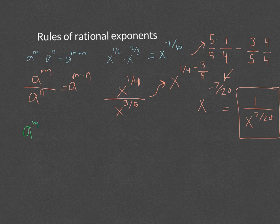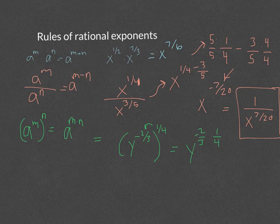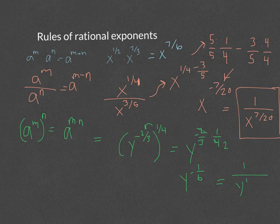When raising a power to another power, a to the m, all to the n, we multiply the exponents. For example, y to the negative 2/3, all to the 1/4 power, we multiply: negative 2/3 times 1/4. Canceling the 2 and 4 gives y to the negative 1/6, which we rewrite as 1 over y to the 1/6 to avoid negative exponents.